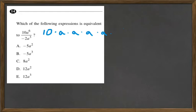3, 4, 5, and 6. And let's put all of that over negative 2 times a 3 times, which is the same as a to the 3rd.